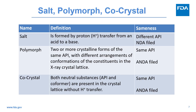This slide compares salt, polymorph, and co-crystal. Salt is formed by proton transfer from an acid to a base. Polymorph refers to two or more crystalline forms of the same active pharmaceutical ingredient, API, with different arrangements or conformations of the constituents in the X-ray crystal lattice. In a co-crystal, both neutral substances — the API and co-former — are present in the crystal lattice without proton transfer.